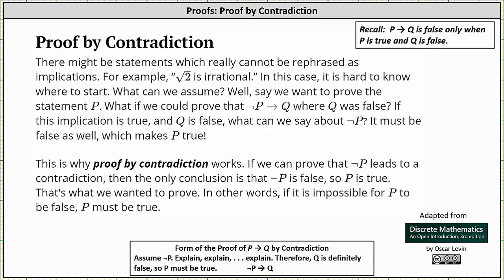Welcome to an introduction to the mathematical proof method of proof by contradiction. There might be statements which really cannot be rephrased as implications. For example, the square root of 2 is irrational.